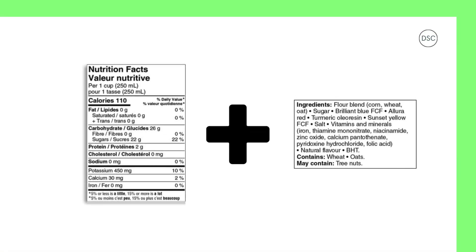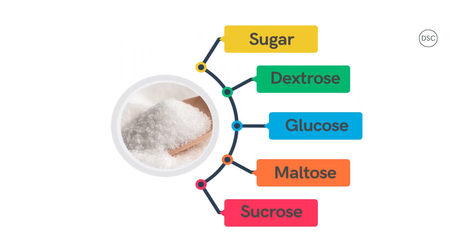So how can we tell if sugars have been added or if they are naturally present? The ingredients list can help. Ingredients lists are in order of quantity, so if sugar is listed among the first ingredients, it is the most plentiful. Added sugars can go by many different names — sugar ingredients often end in '-ose,' so look for names like dextrose, glucose, maltose, and sucrose. Added sugar also comes from common ingredients like honey, agave syrup, and juice concentrate.